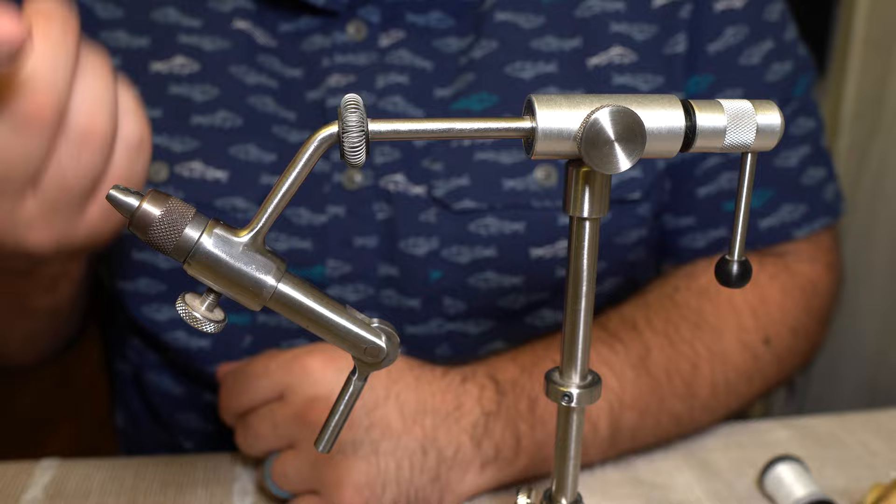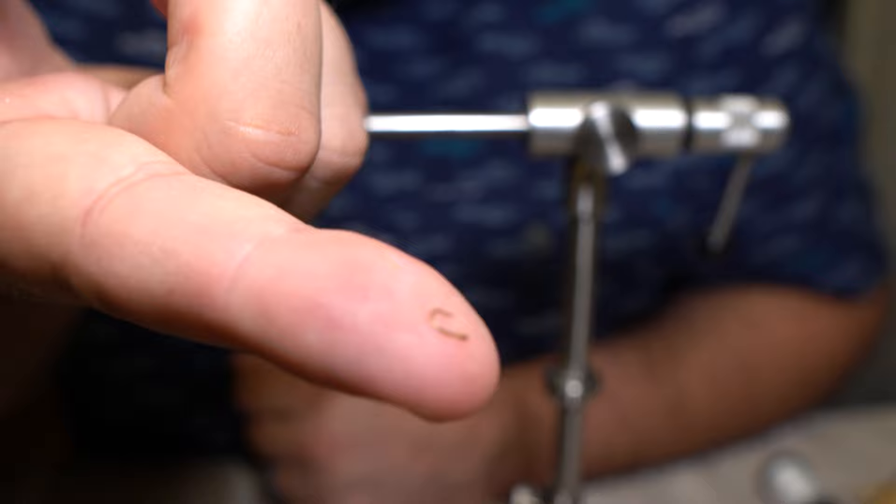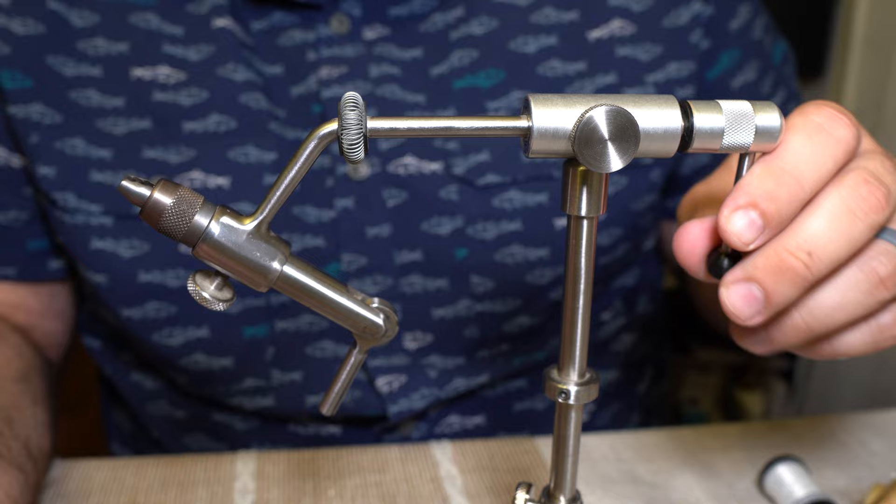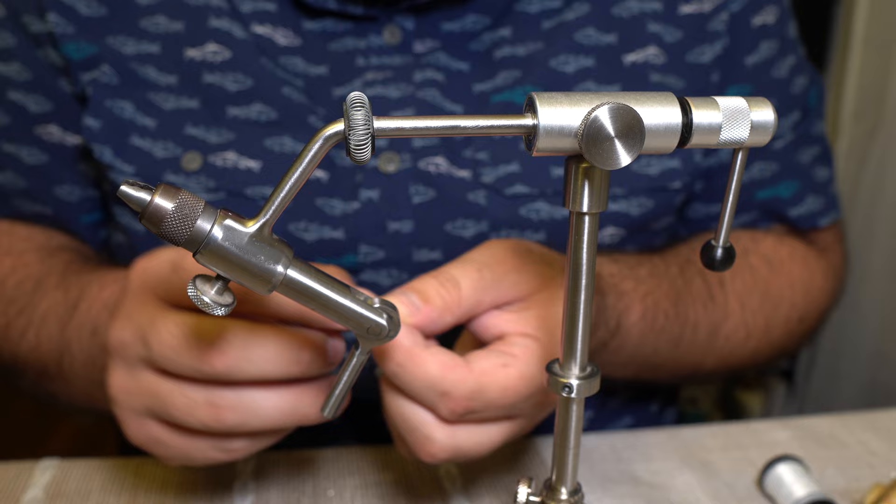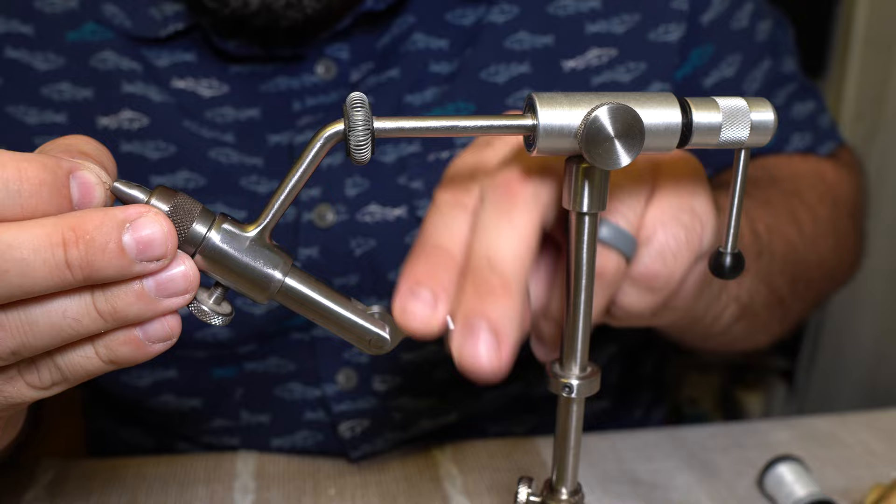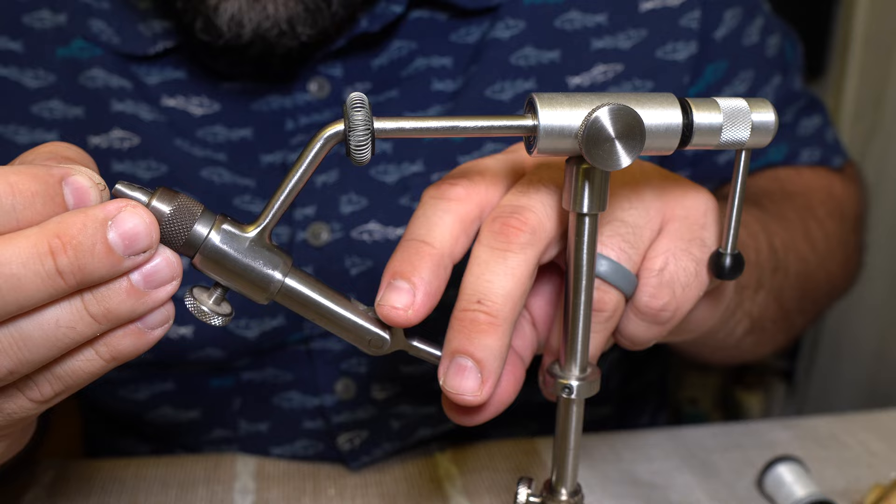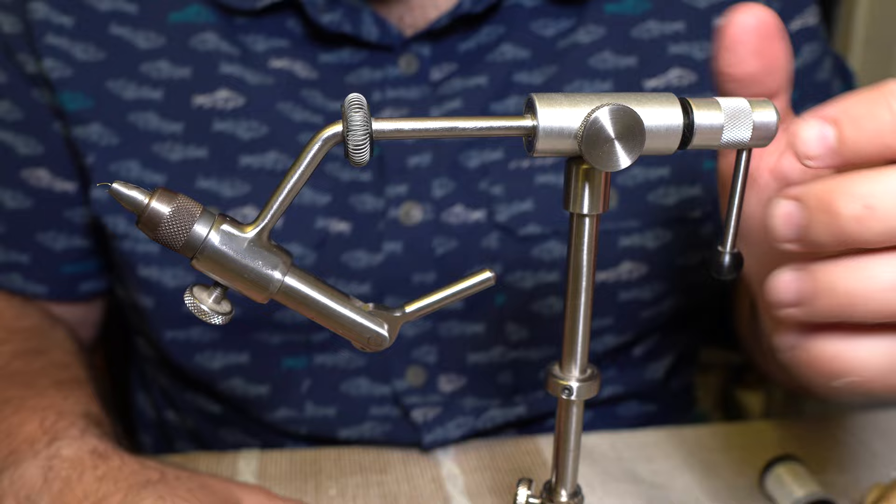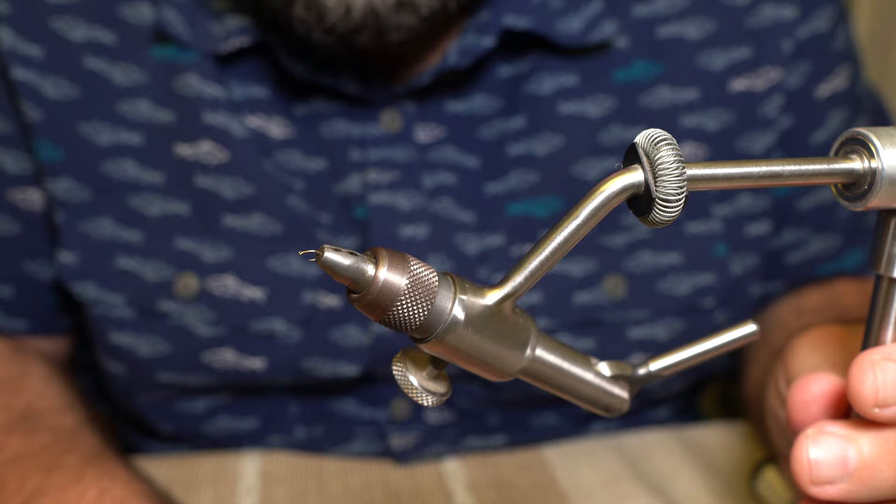These are truly minuscule. It's just a tiny, tiny little hook. So I'm going to try to situate this hook in the jaws of this vise. Man, I can barely even hold on to this thing it's so small. All right, so that's in there. So we got a size 26 hook in.